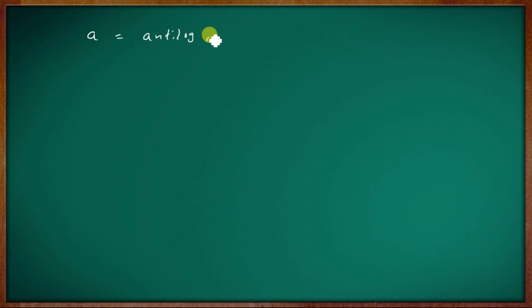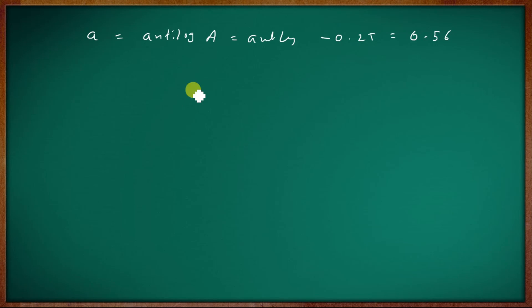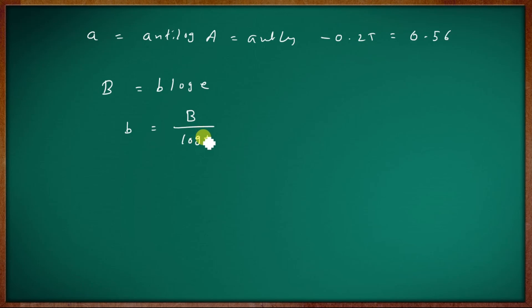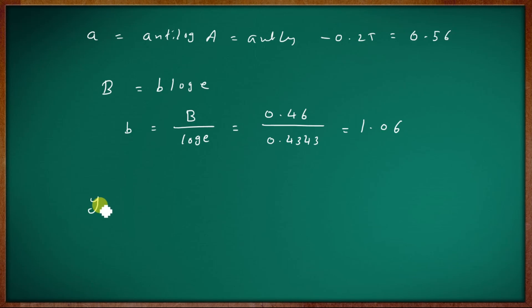Now we find small a and small b. Small a equals antilog of capital A = antilog(minus 0.25) = 0.56. Capital B equals small b into log e, so small b = capital B divided by log e = 0.46 / 0.4343 = 1.06. Therefore the best fit curve is y = 0.56 into e raised to 1.06x.